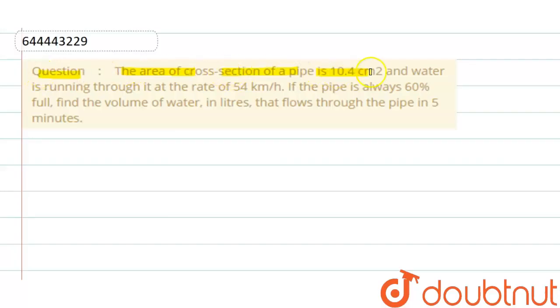The area of cross section of a pipe is 10.4 centimeter square and water is running through it at the rate of 54 kilometer per hour. If the pipe is flowing 60 percent full, find the volume of water in liters that flows through the pipe in five minutes.